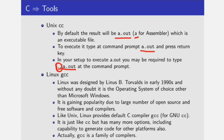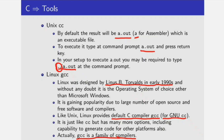Then comes Linux GCC, which I'll be using for all remaining videos on C language. Without any doubt, it is the operating system of choice other than Microsoft Windows. It is gaining popularity due to a large number of open source and free software and compilers. Like Unix, Linux also provides a default C compiler — GCC, for GNU C compiler. It is just like CC but has many more options, including the capability to generate code for other platforms. Actually, GCC is a family of compilers.